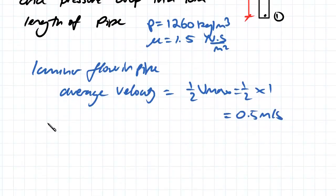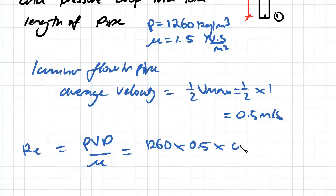Therefore, what we can do is apply Reynolds number. So Reynolds number is equal to ρVD over μ. So we're just going to substitute in those values we had here, our diameter which we know, and also our average velocity. So 1260 multiplied by the velocity of 0.5 multiplied by 0.075 meters.